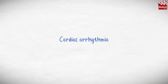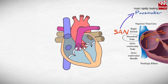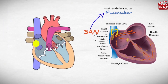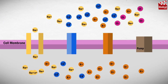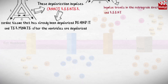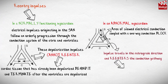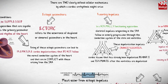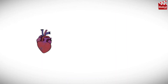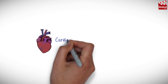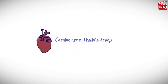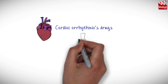In the previous lecture we discussed an introduction to cardiac arrhythmia, including cardiac myocytes action potential, arrhythmia mechanisms and types. In this lecture we'll start talking about cardiac arrhythmia drugs.